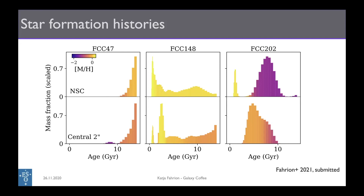Finally, we can have systems like this dwarf galaxy where the nuclear star cluster is significantly more metal-poor than the host galaxy. While the ages are more or less on average the same, the metallicity is very different, and there is even some quite recent star formation happening in this nuclear star cluster.